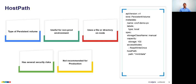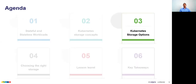Now let's move on to Kubernetes storage options. To summarize what we've covered: pods that need persistent storage reference PVCs, PVCs map to PVs, and storage classes can be used for dynamic provisioning. For local storage you can use host path.